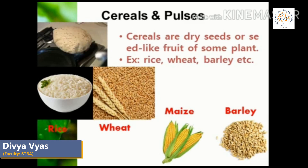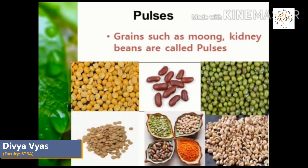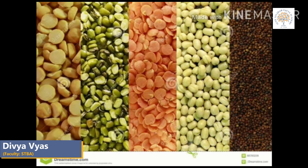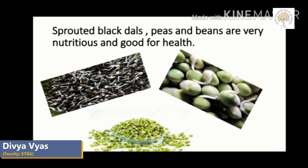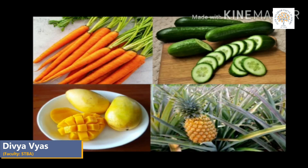Pulses are seeds such as red gram, black gram, peas and beans. Pulses are the main source of body-building food — that is, proteins — for vegetarians. Sprouted black or green dals, peas and beans are very nutritious and good for health.